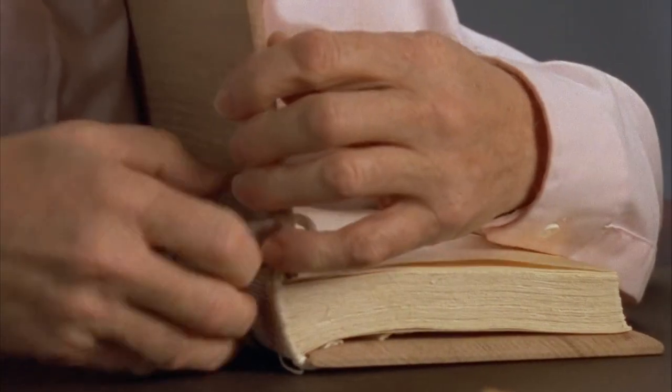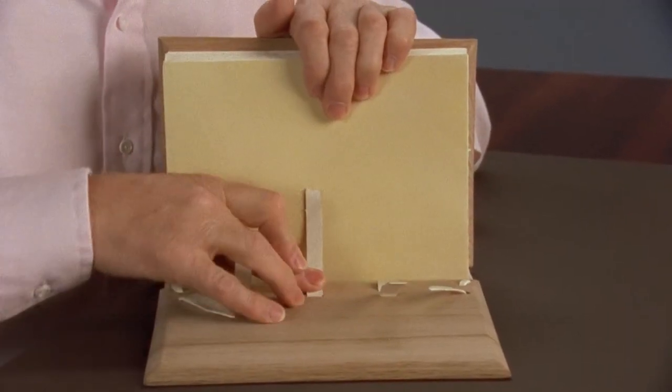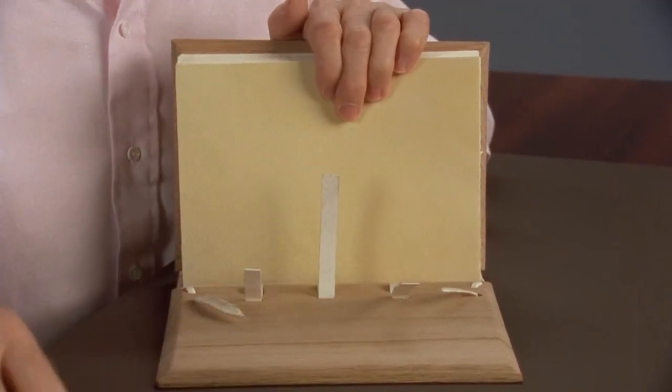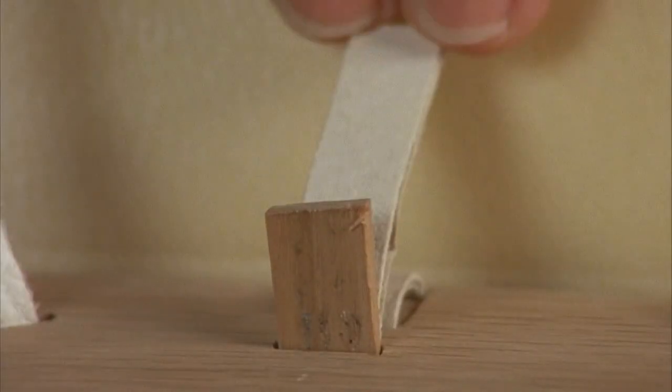The binder then laced the leather thongs along the spine through channels and tunnels, which had been carved into wood boards. These boards were the covers of the manuscript. The thongs could be held in place by wood pegs or iron nails.